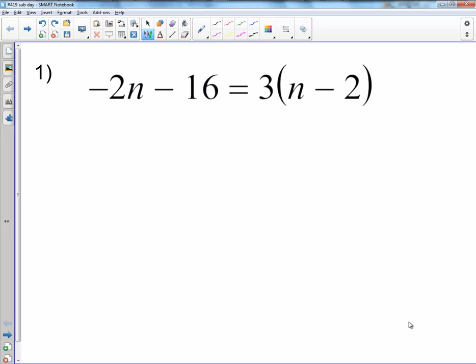So first step here when I look at this problem is I want to see what needs to be done before I can combine like terms. And what that means is I can't manipulate this end because of these parentheses. So what I have to do is distribute the 3 throughout the parentheses. So I have 3 times n which is 3n and then I have 3 times negative 2 which is negative 6. And then I bring down the negative 2n minus 16.